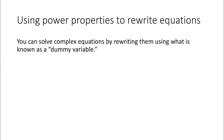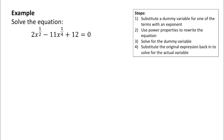We can also use power properties to rewrite equations. This will allow us to solve some complex equations by rewriting them using what is known as a dummy variable. Suppose we have to solve the equation 2x to the 1 half minus 11x to the 1 fourth plus 12 equals 0.